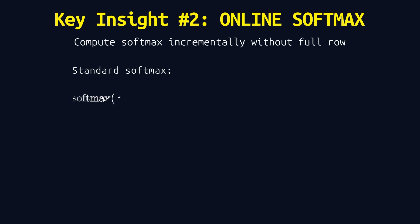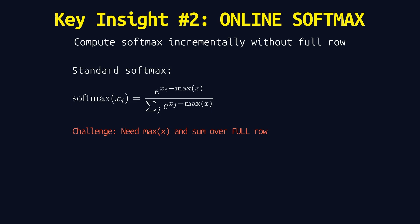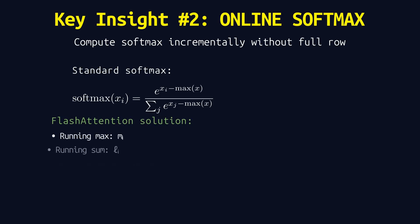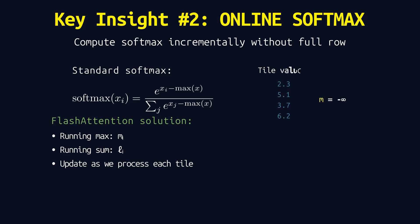Key insight number 2: Online softmax. Standard softmax requires seeing the entire row to find the max and compute the sum. But since we're processing in tiles, we don't have the full row yet. The solution is a streaming softmax algorithm. We maintain a running max and a running sum. As we process each tile, we update these statistics incrementally. When we see a new tile with a larger value, we adjust the running max and rescale everything computed so far. This keeps the softmax numerically stable — no overflows — while letting us compute it piece by piece without storing the full attention scores.